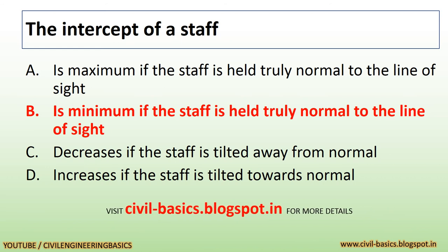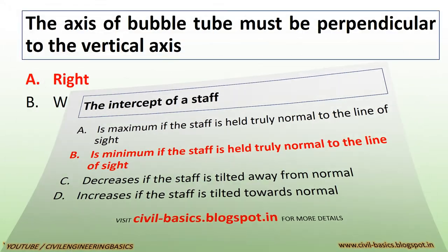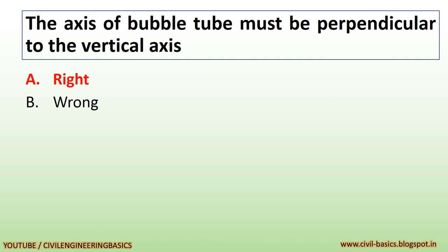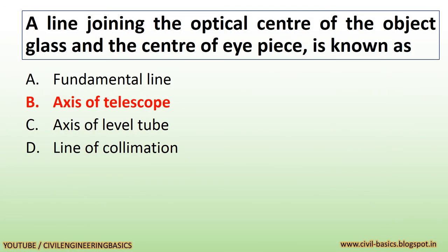The intercept of a staff is minimum if the staff is held truly normal to the line of sight. The axis of the bubble tube must be perpendicular to the vertical axis. A line joining the optical center of the object glass and the center of the eyepiece is known as the axis of telescope.